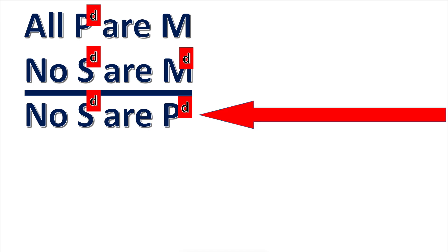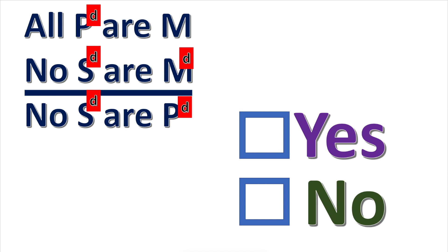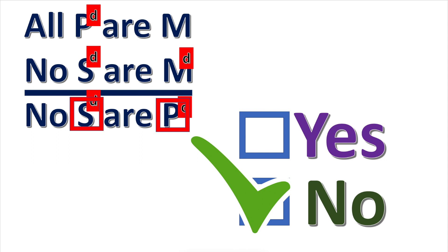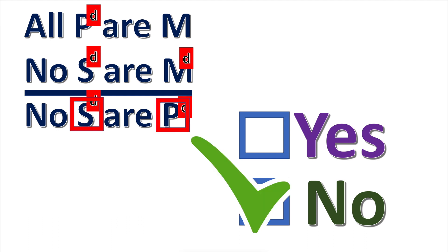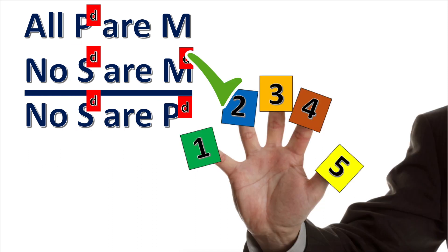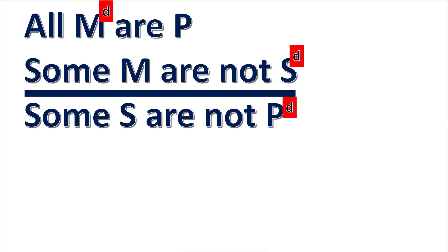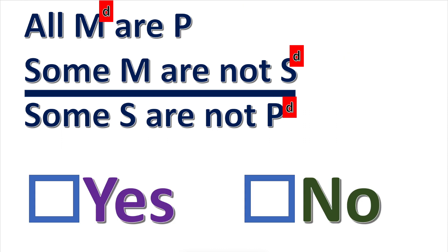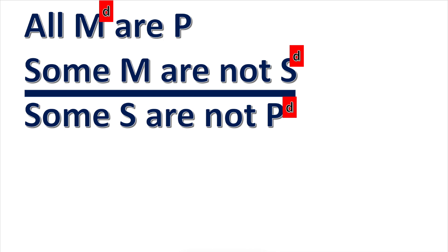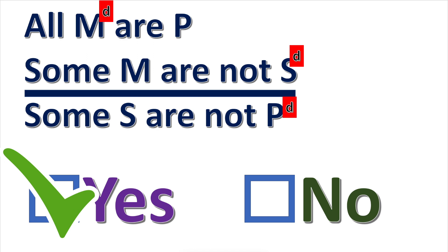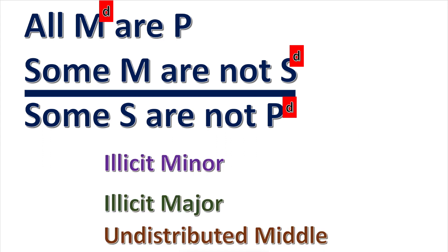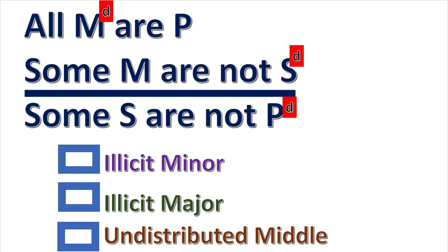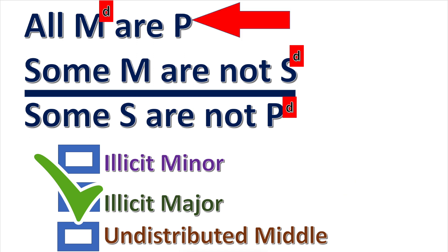Next practice problem: is there a term distributed in the conclusion but not in the premises? Both terms are distributed in the conclusion and in the premises, so rule two is not broken. In the following practice problem, P is distributed in the conclusion but not in the premise, so rule two is broken. Since the term distributed in the conclusion but not in the premises is the major term, the fallacy of illicit major is committed.